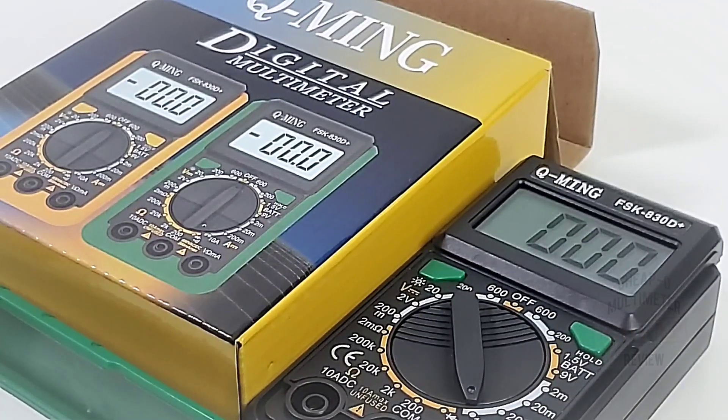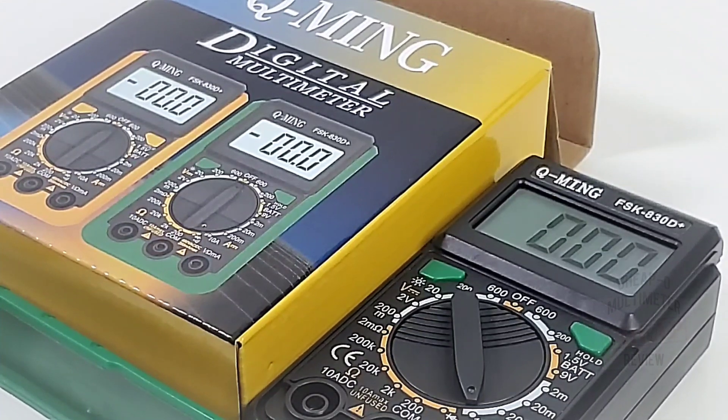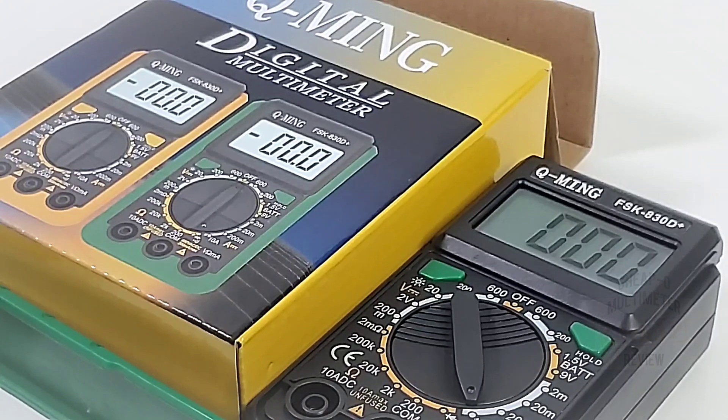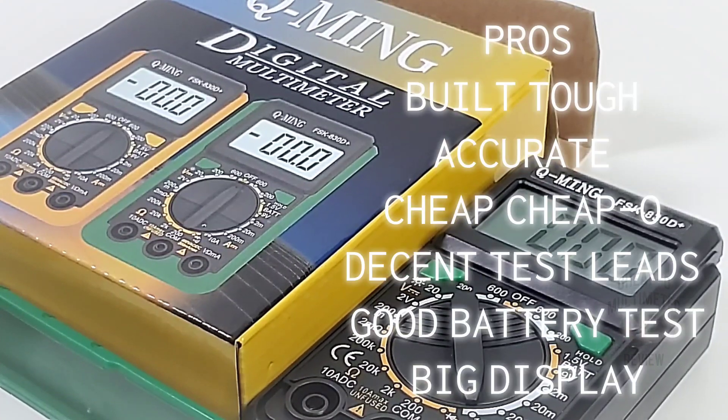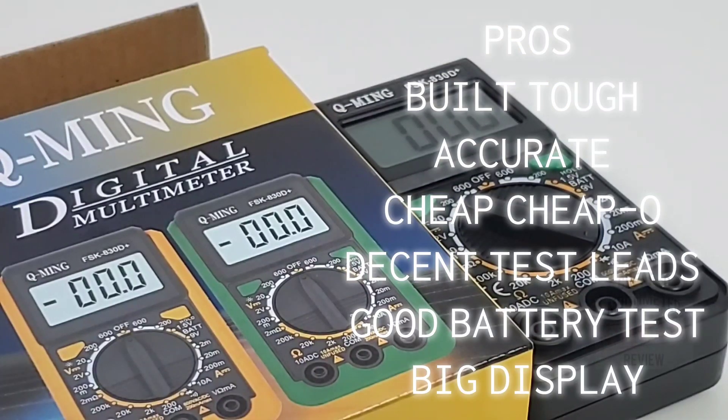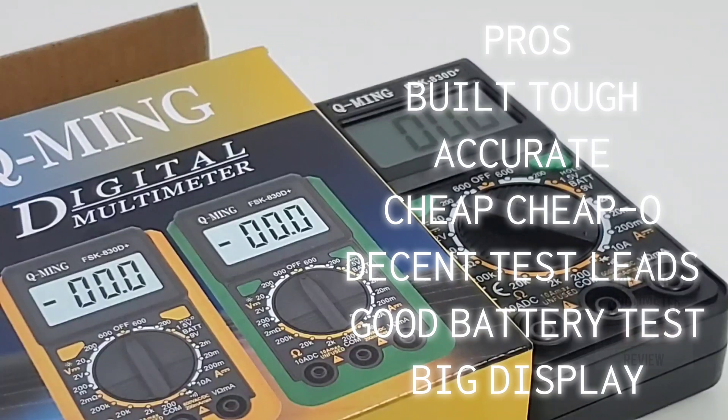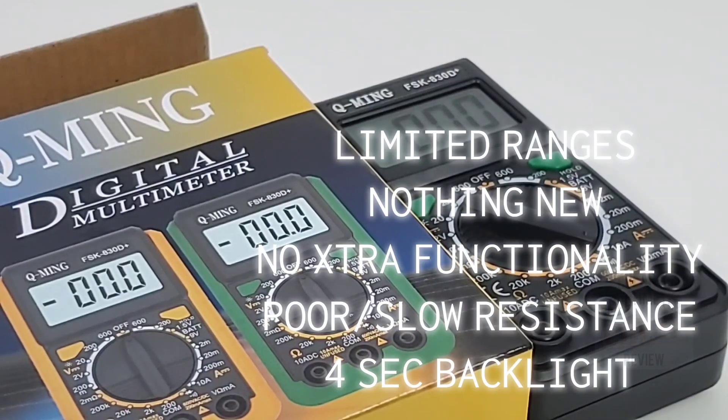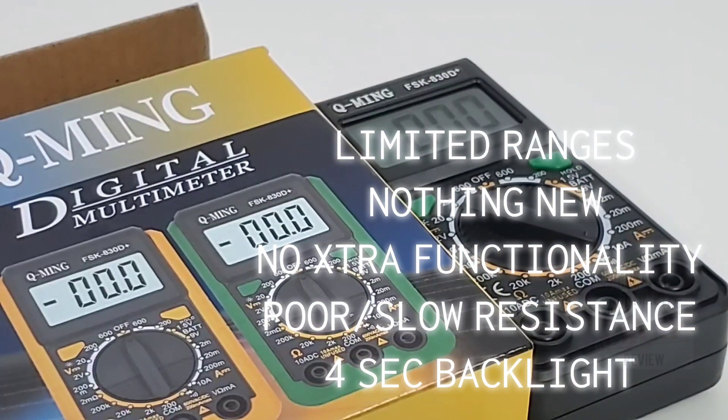Closing thoughts on the Q-Ming FSK 830D Plus. Well, it is definitely a cheapo clone. 830Ds are all over the place and here's another rendition. Doesn't do anything new, really doesn't do anything that exciting. It is what it is. So what is it? Well, it's a good cheapo meter if you want a basic throw in the toolbox, throw in the car, heck just throw it anywhere. This thing is a beast. These little things are definitely robust and can take a lot of abuse, so great to have one of these cheapos anywhere you need a multimeter.